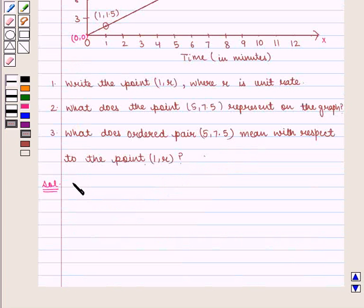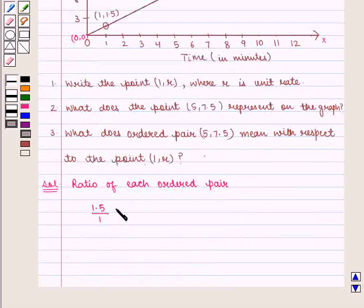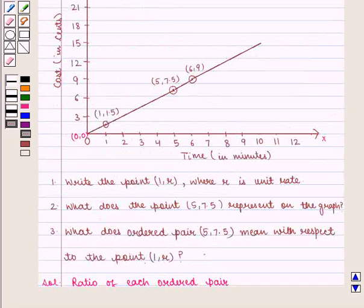Also, the ratio of each ordered pair is given by 1.5 upon 1, which is equal to 7.5 upon 5.